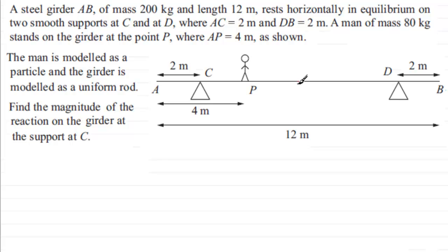So that weight is going to act in the middle. If we say that's the middle, the weight acts downwards here and we'll write that in as 200G, G for the acceleration due to gravity, which I'm going to take as 9.8 throughout the problem. So we've got the weight of the girder.